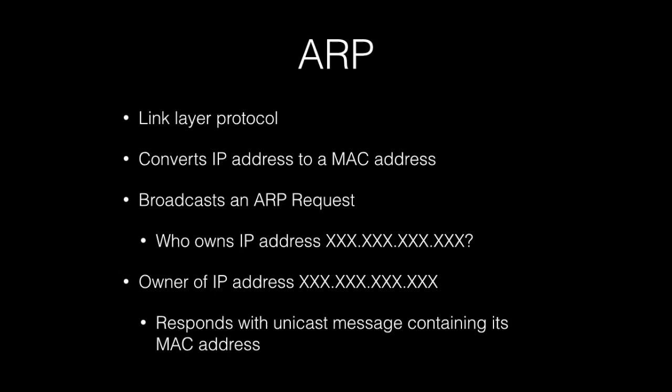The ARP protocol is this link layer protocol that will provide the mapping between IP addresses and MAC addresses. The way it performs this function is by broadcasting an ARP request. An ARP request is in the form of 'who owns a specific IP address,' and this is broadcast over the entire network. The owner of that IP address will then respond with a unicast message containing its MAC address, directed to the host that requested it.